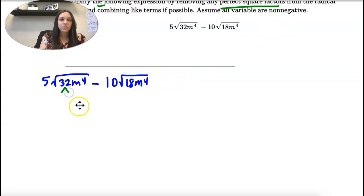So, 32 has some perfect squares in there. Think if you can divide by 4. Yeah, 4 times 8. And then you can keep going. 8 has a perfect square. 4 times 2. And then n to the 4th also is a perfect square. So, I'm going to rewrite this as 4 times 4 times 2. And I'm going to break up my n to the 4th as n squared, n squared.